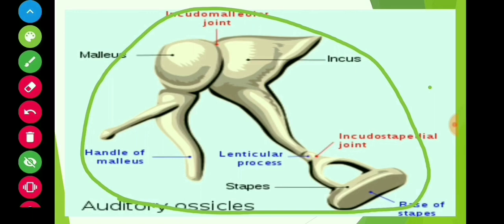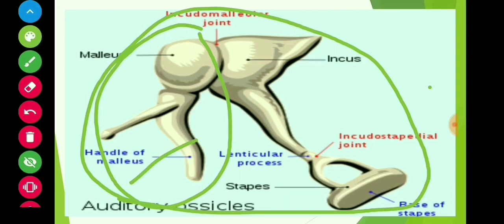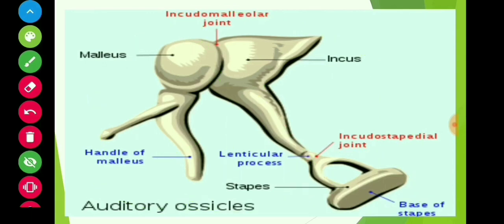Three minor bones are present in the middle ear. The first is the malleus, which is the handle. In the center part there is another minor bone called the incus, and it is attached with the third one, which is the smallest bone of our body — the stirrup-shaped stapes.